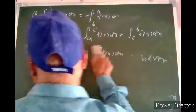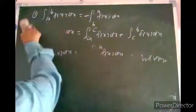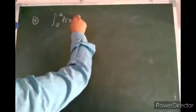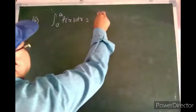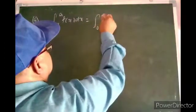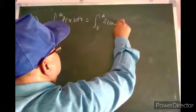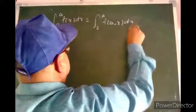Another property is the fourth property: from 0 to a, f(x) dx is equal to from 0 to a, f(a minus x) dx.